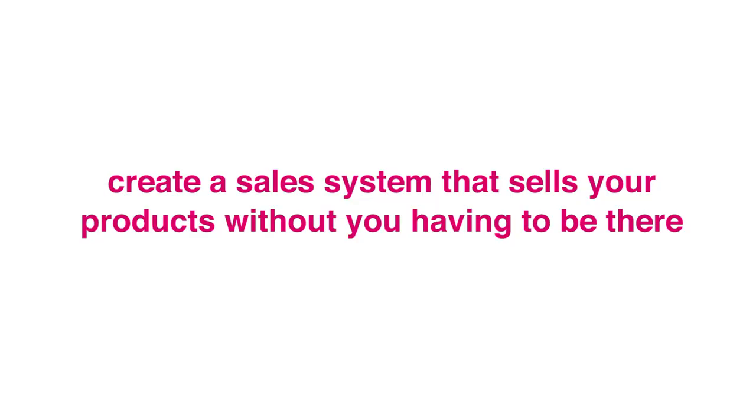The third thing I did to create a passive income lifestyle was I created a sales system that sold my products without me having to be there. Now I say this gingerly because I know there are a lot of seven-figure businesses that trade their time to make sales. I'm still a multiple six-figure business — we haven't hit seven figures yet, but I believe it's coming. I understand there are many seven-figure online entrepreneurs who use their time to make sales.